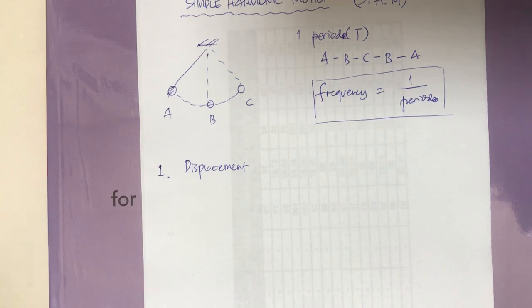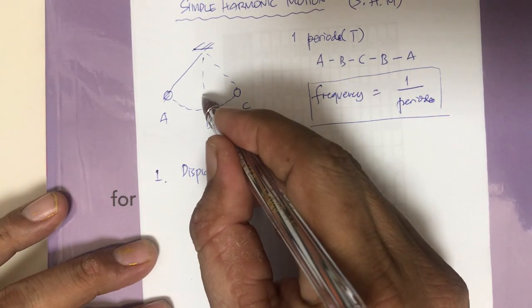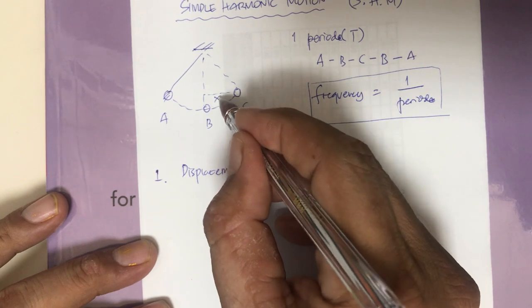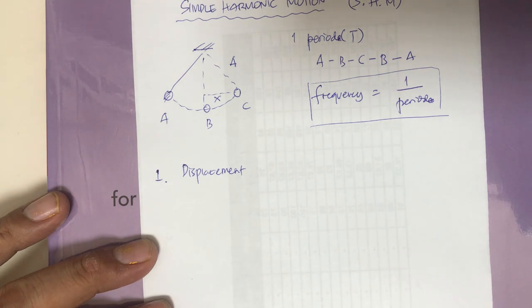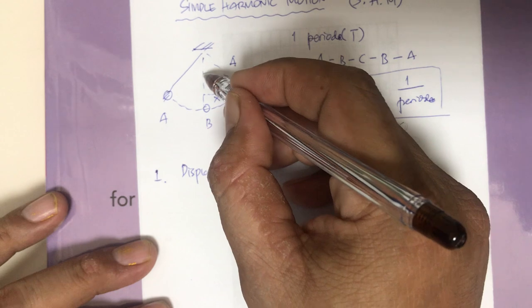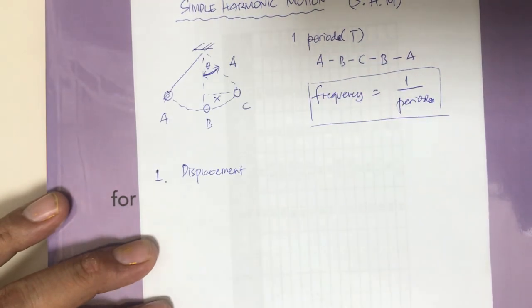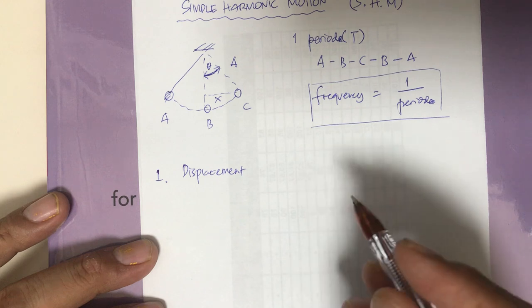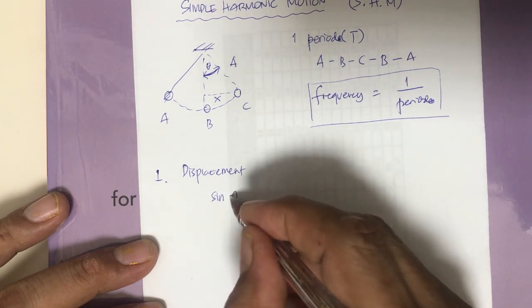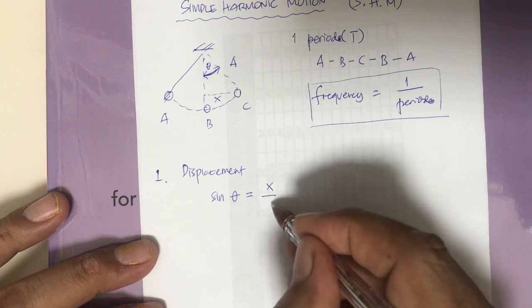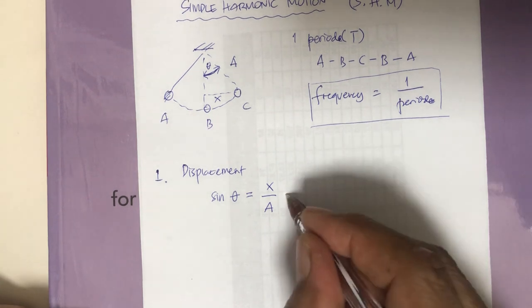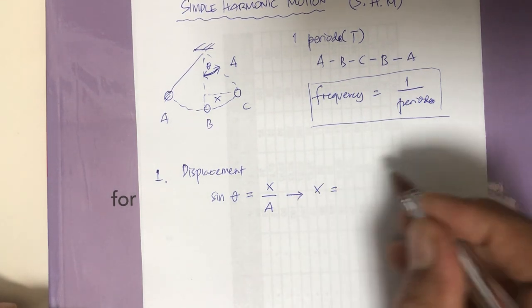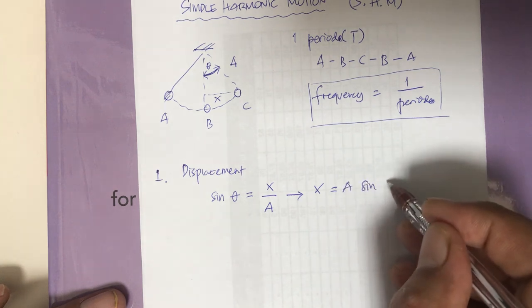We may get questions about displacement, velocity, and acceleration. Let's say x is the displacement and A is the amplitude — the maximum x, same thing as maximum amplitude. This is the angle of swing theta. Between theta, x, and A, there is a relationship using sine: sine theta equals x divided by A.